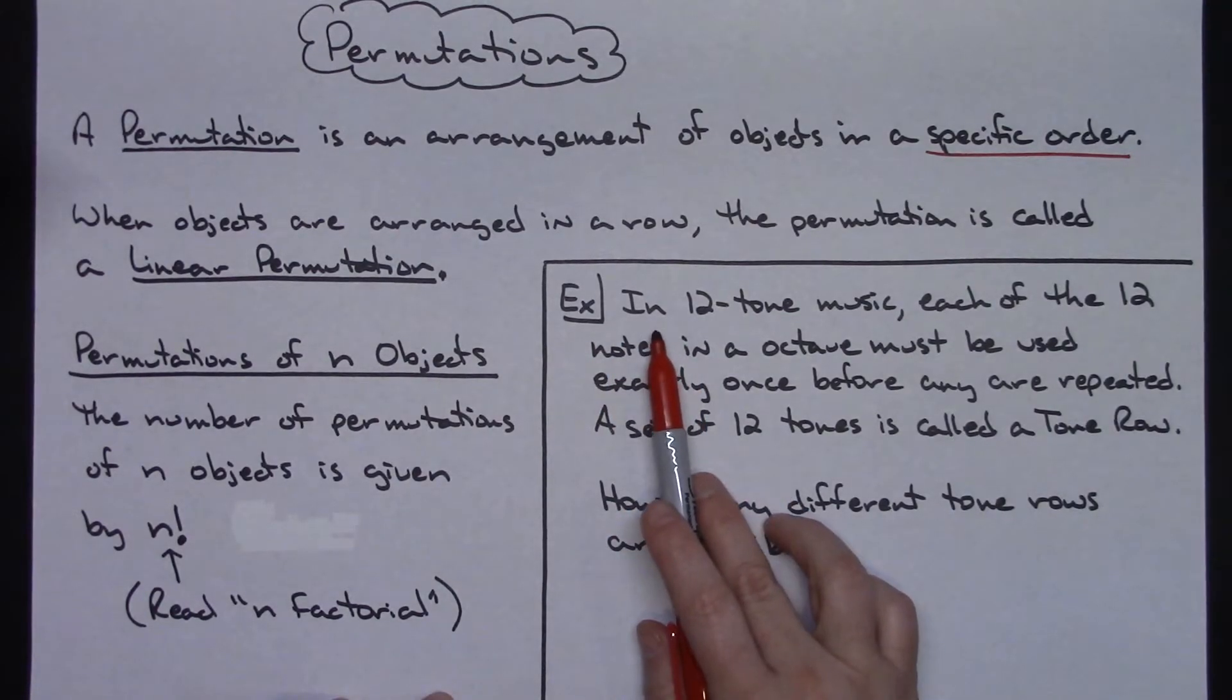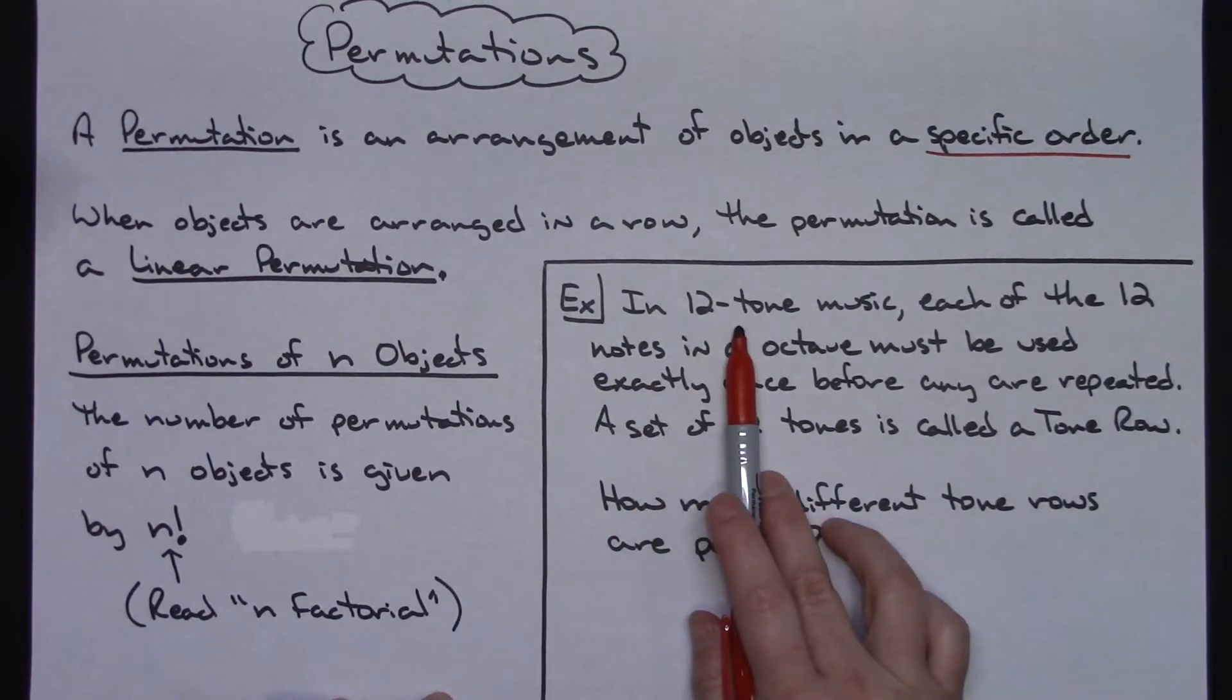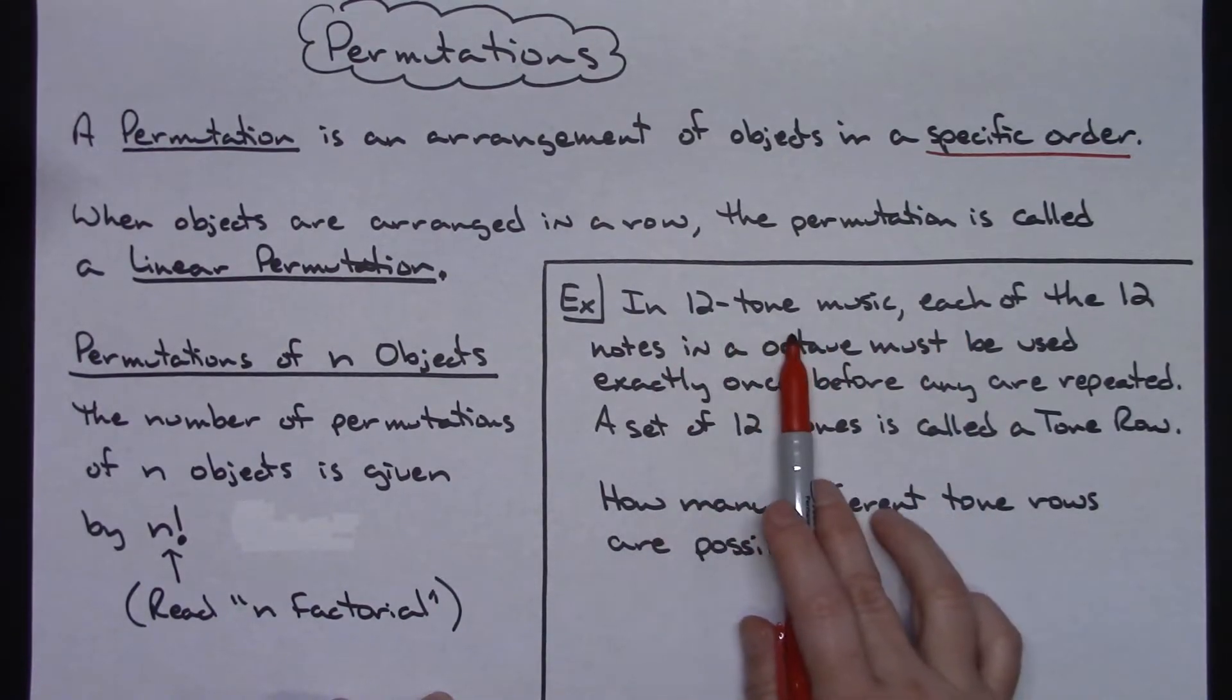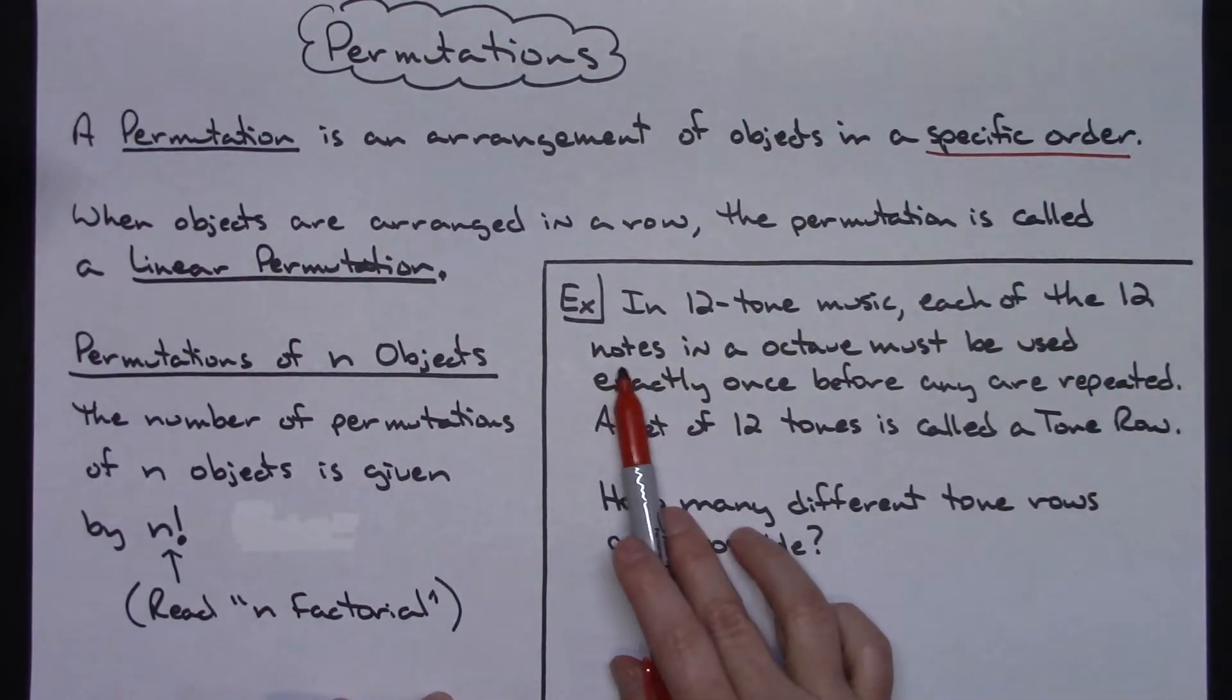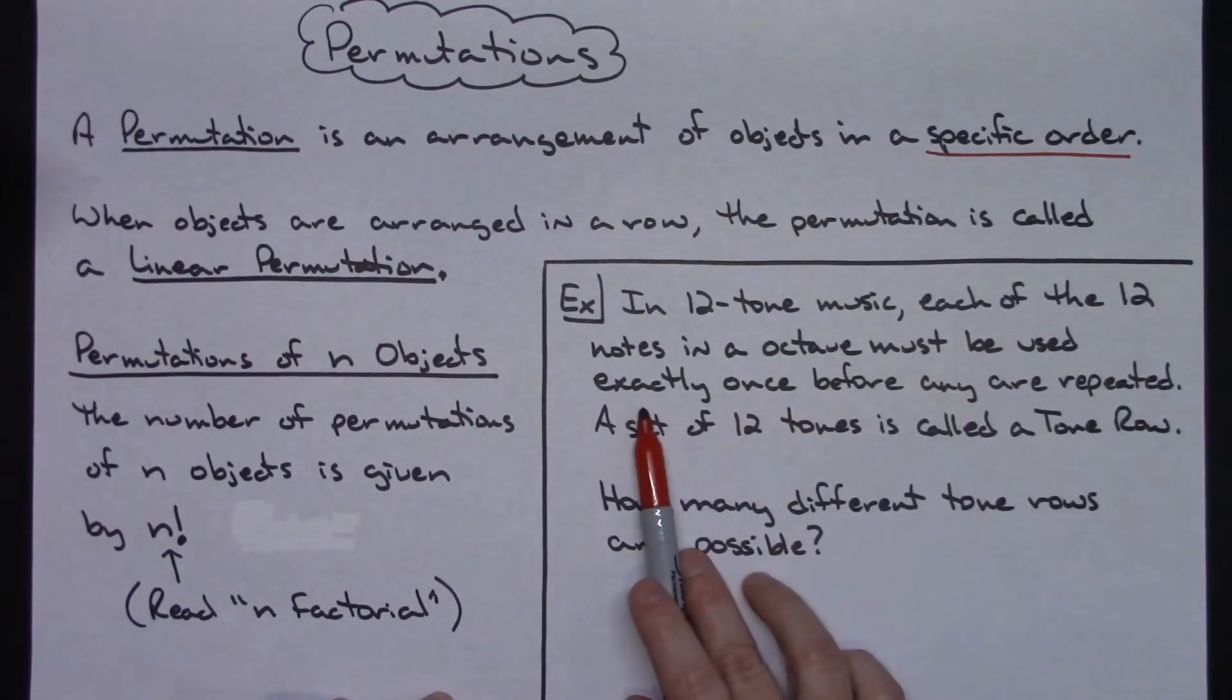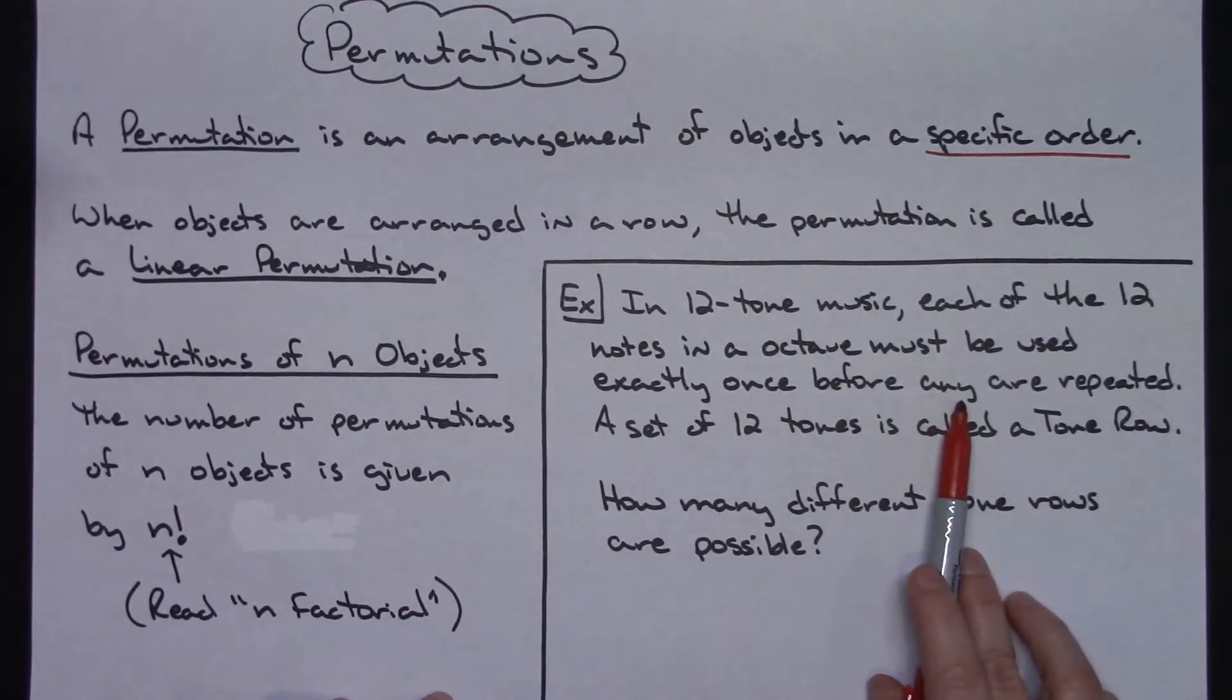So in this example, in 12 tone music, each of the 12 notes in an octave must be used exactly once before any are repeated.